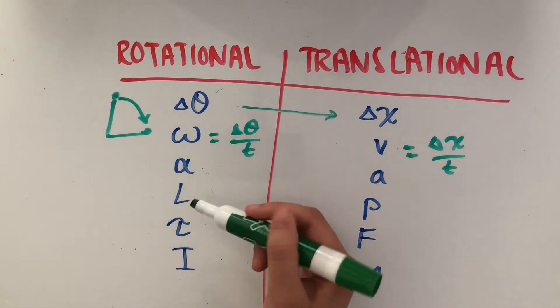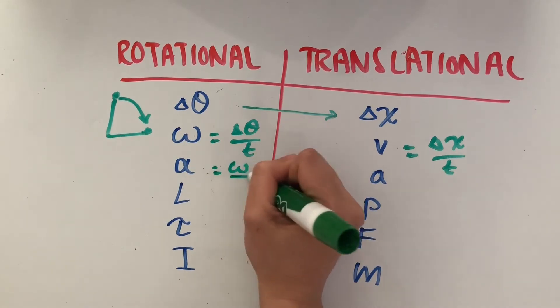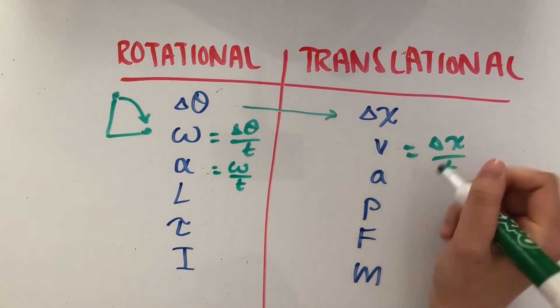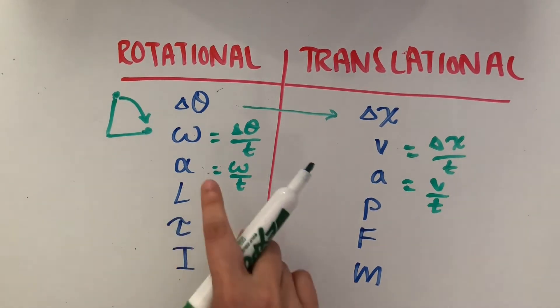Angular acceleration is angular velocity over time, while translational acceleration is velocity over time. Even their symbols look similar - we have α and a.